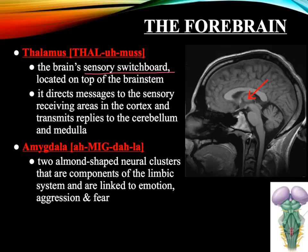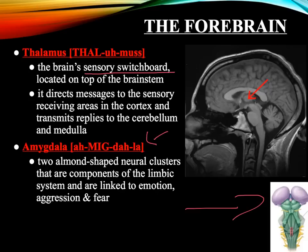The amygdala — it might be easier to spell it amygdala, but it's pronounced amygdala — consists of two almond-shaped neural clusters that are components of the limbic system and are linked to our emotions such as aggression and fear. The amygdala is the portion of the brain that processes our emotions.